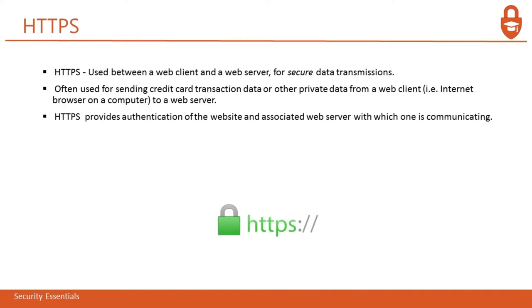Next is HTTPS. HTTPS is used between a web client and a web server like HTTP, but the difference is HTTP is non-secure and HTTPS is secure communication. It is often used for sending credit card and transaction data or other private data from a web client to a web server. You can share credentials and credit card numbers in HTTPS because it's a secure channel between your browser and the server. It uses SSL technology and encryption, and provides authentication of the website and associated web server.